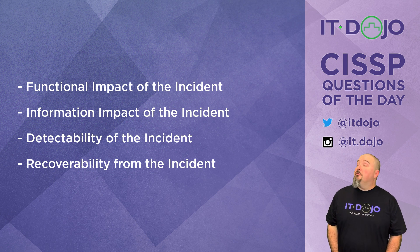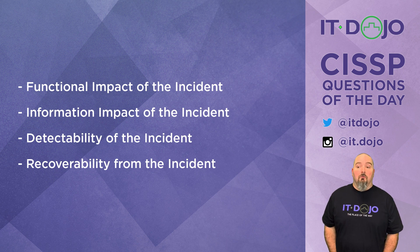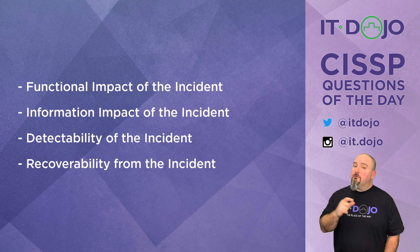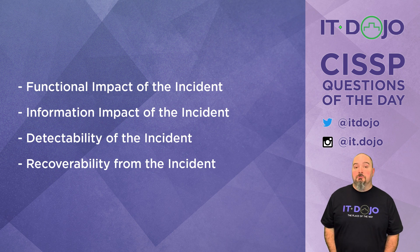Answer choice number one: the functional impact on the environment or on the enterprise. That is very much something you're going to consider — what impact does this particular incident have on the functionality of the business right now? Very frequently this would be categorized as none, low, medium, or high, and that is very much going to contribute to and dictate what your prioritization is going to be as far as a response.